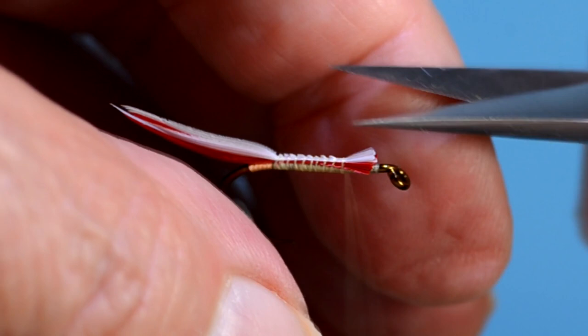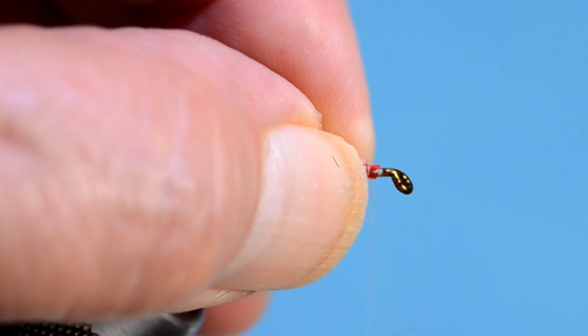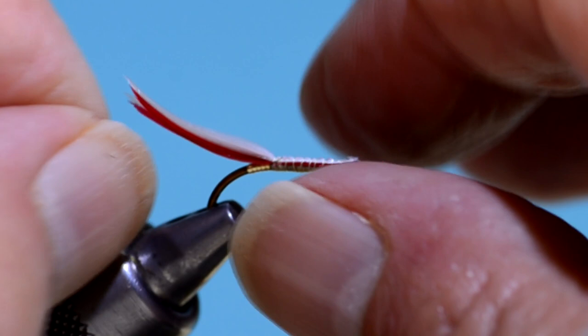Cut off at an angle so that the front of the fly will taper down. Do some more primping, whatever you do.